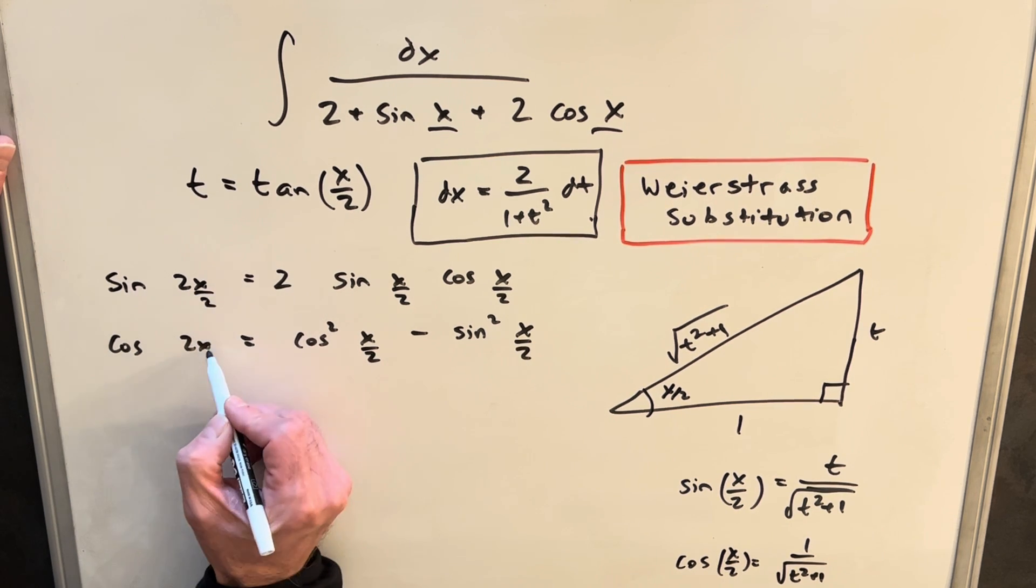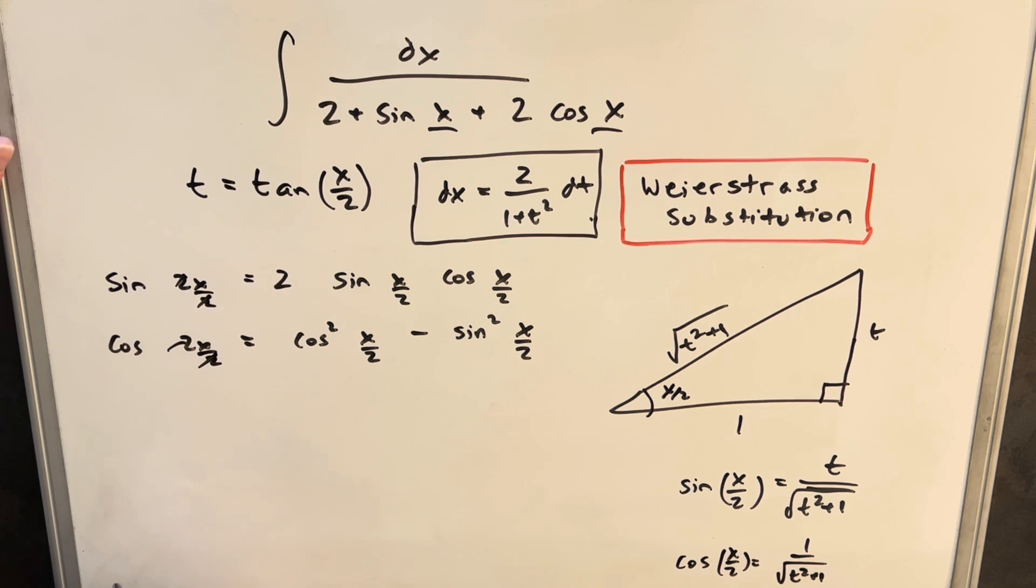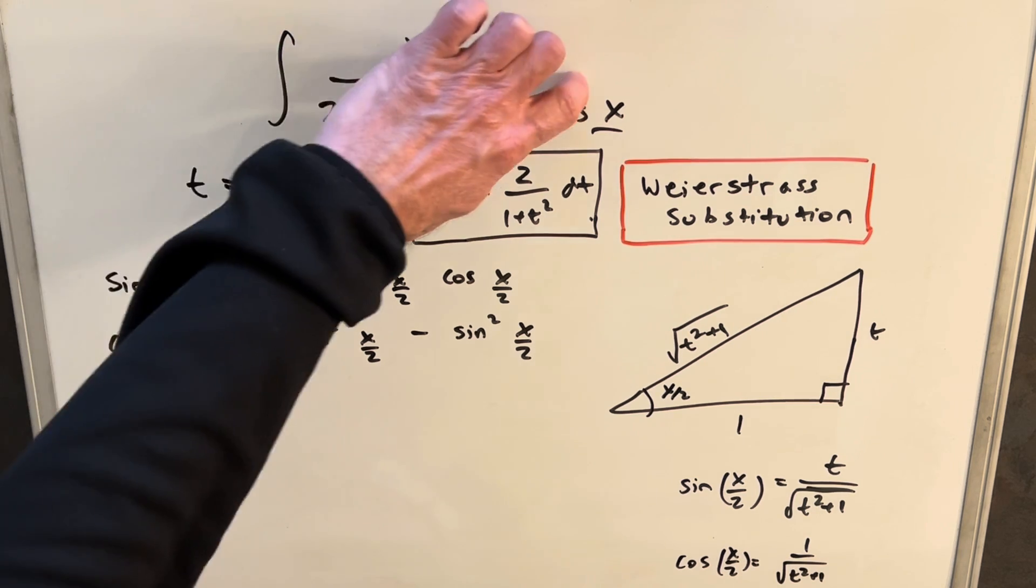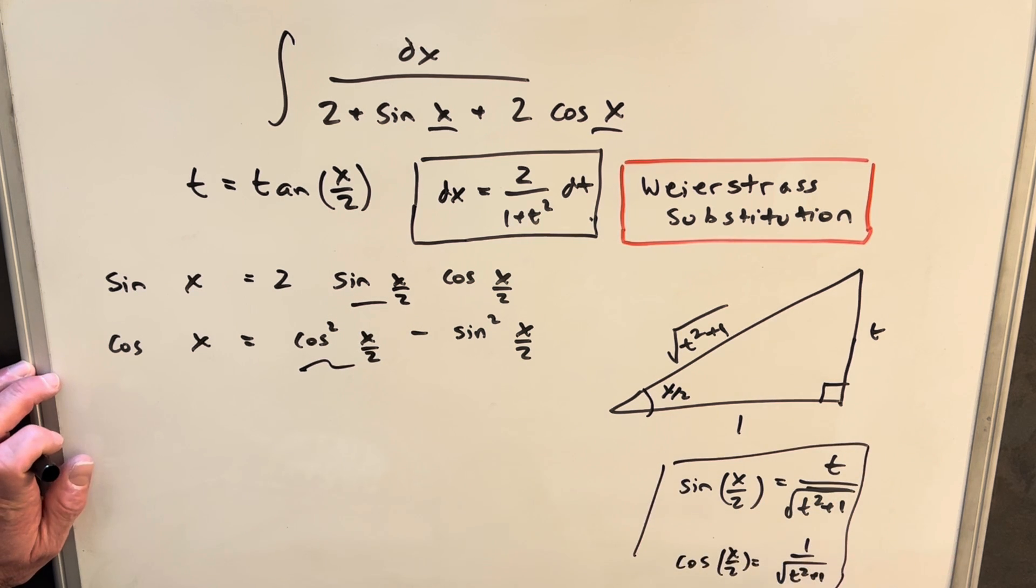And then if we do that here, you'll notice the 2s cancel. So now that we have a formula for sine x and cosine x, that's what we're going to need in the problem when we get back to that. And we know all these values here, so we'll just use those and plug them in.